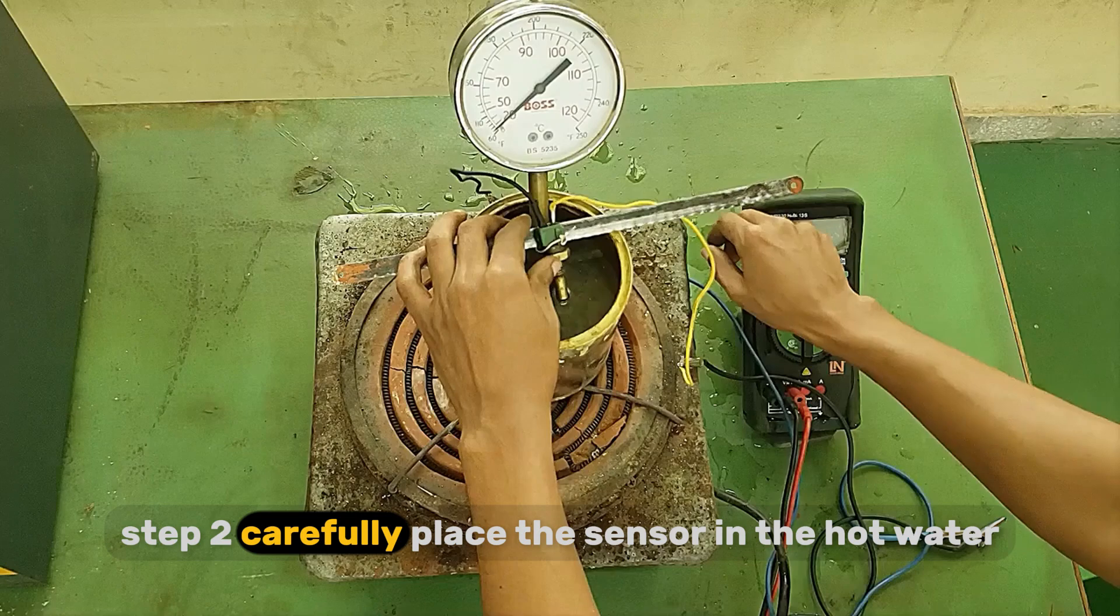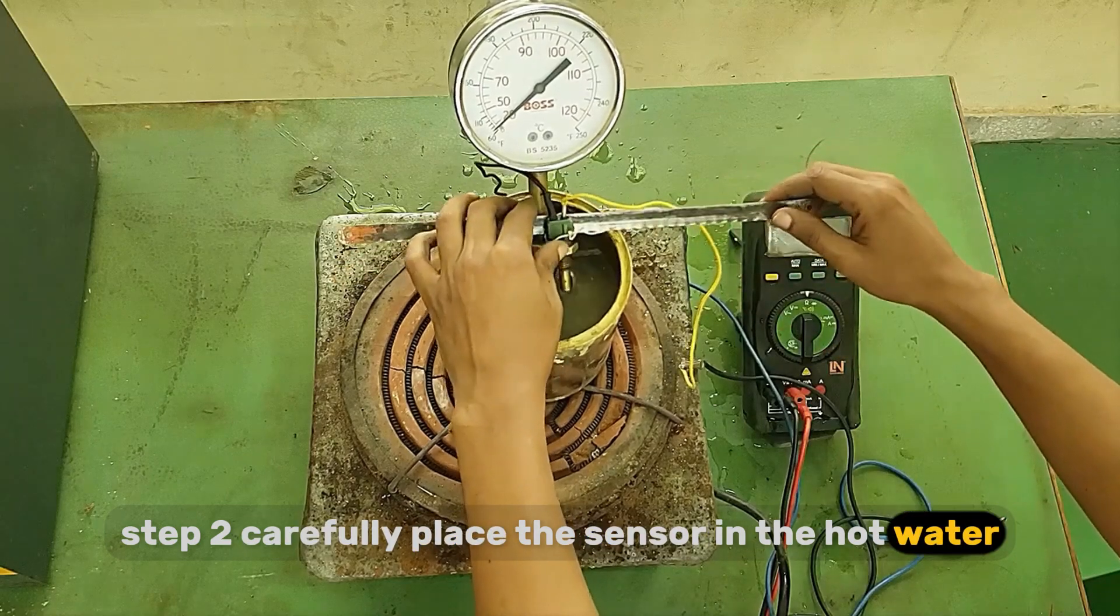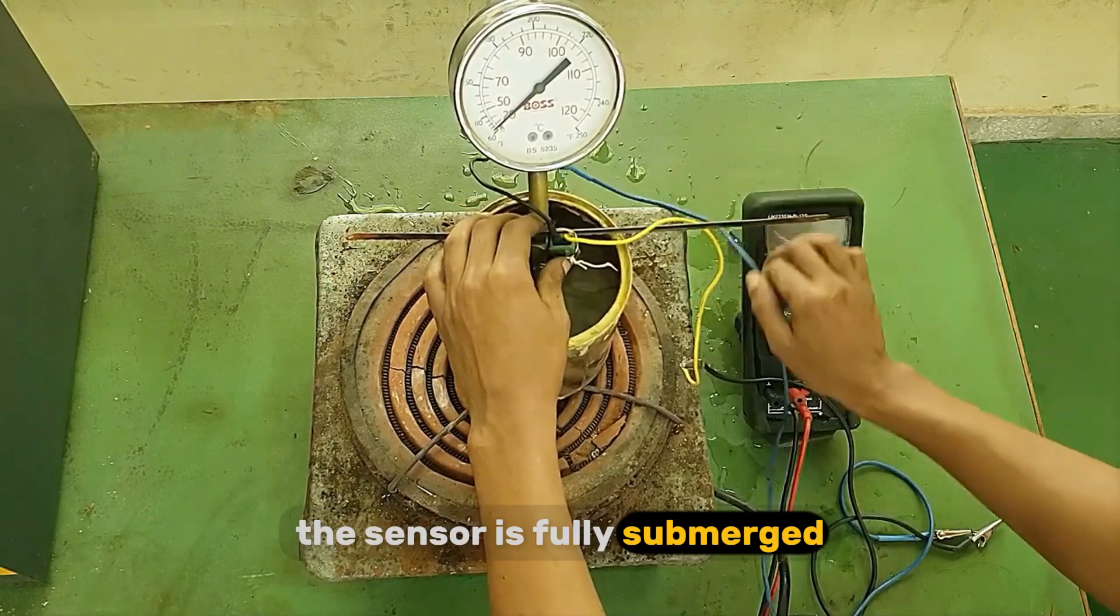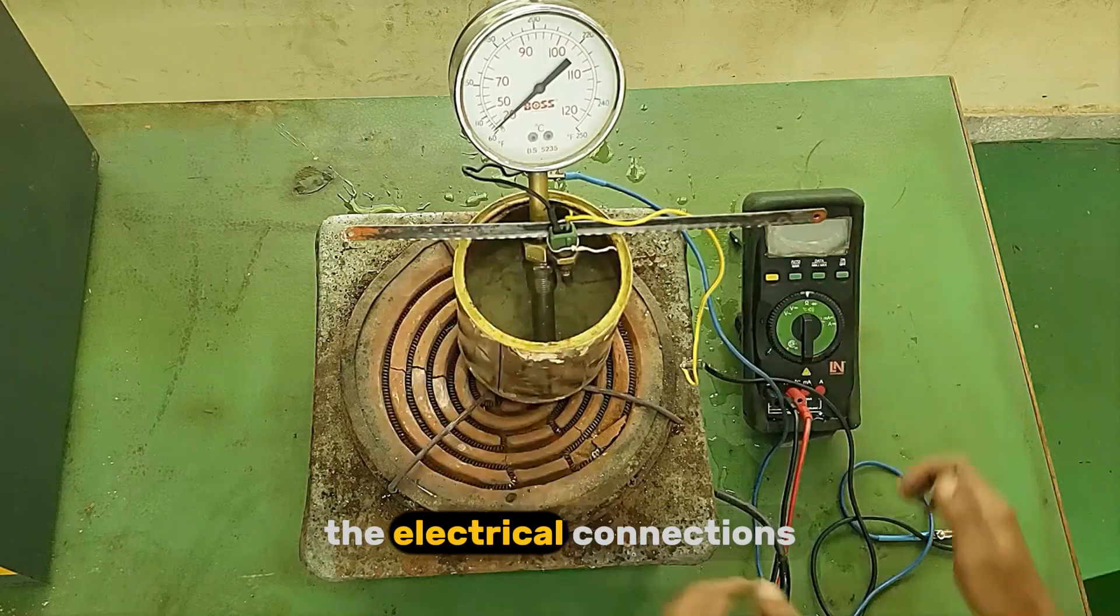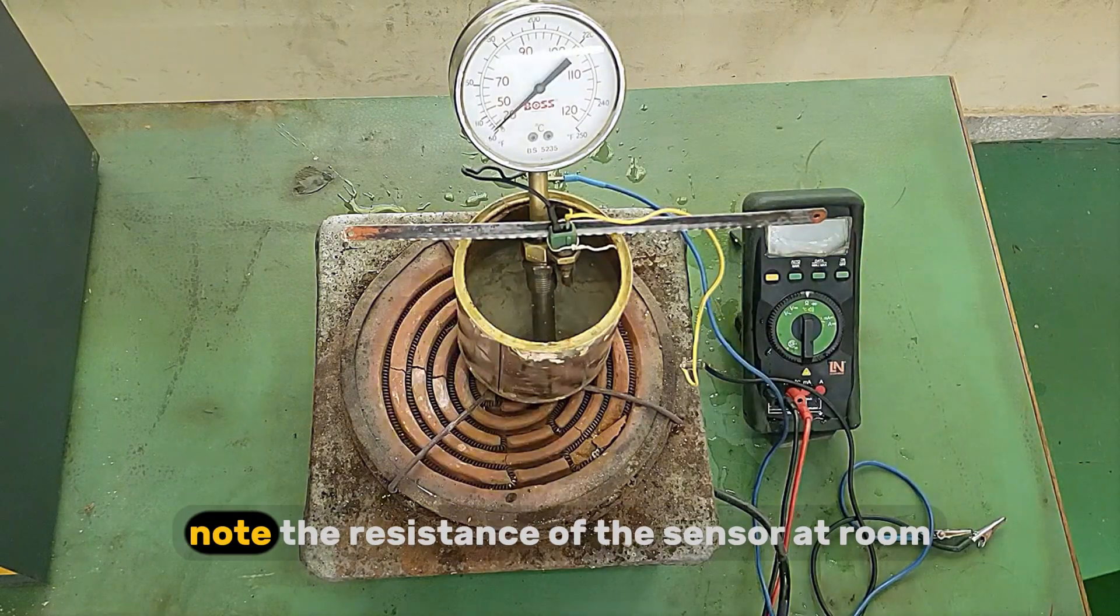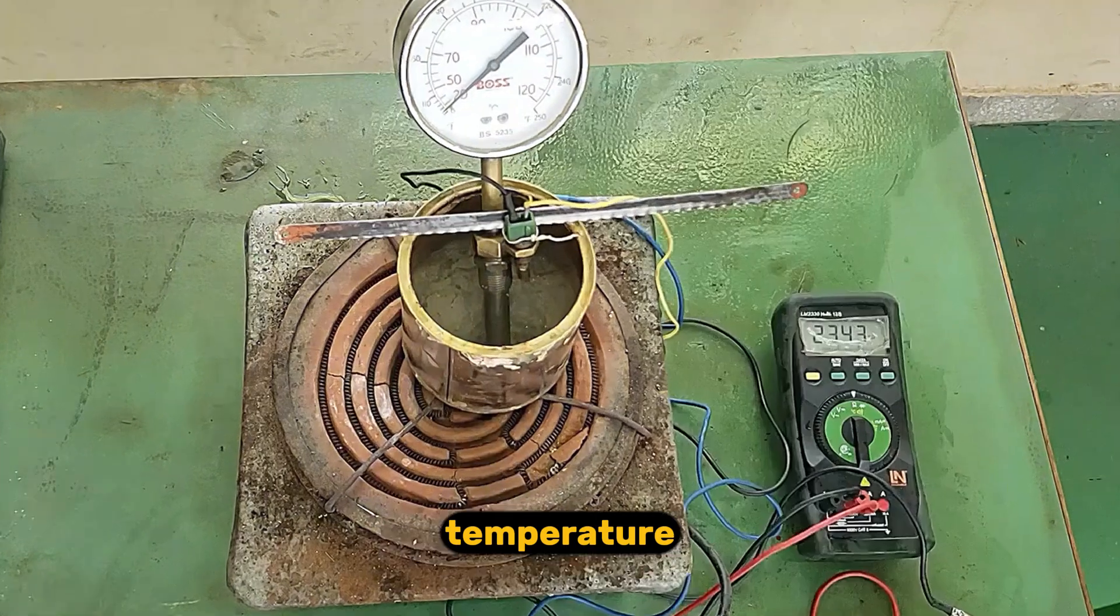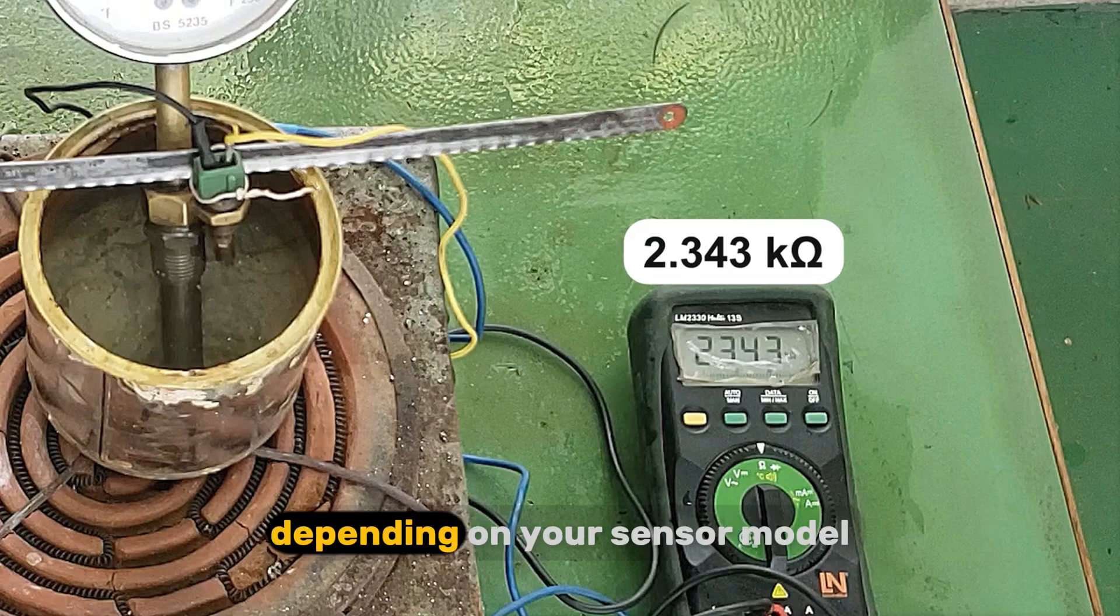Step 2: Carefully place the sensor in the hot water. Make sure the metal tip of the sensor is fully submerged, but don't let the water reach the electrical connections. Note the resistance of the sensor at room temperature. It should be relatively high, depending on your sensor model.